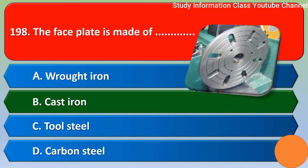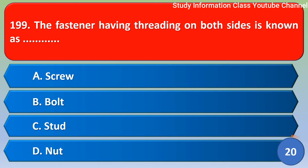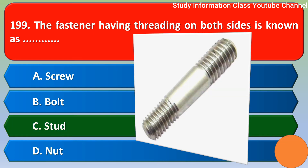Next question. The fastener having threading on both sides is known as: Option A, screw; Option B, bolt; Option C, stud; Option D, nut. The correct answer is Option C, stud.